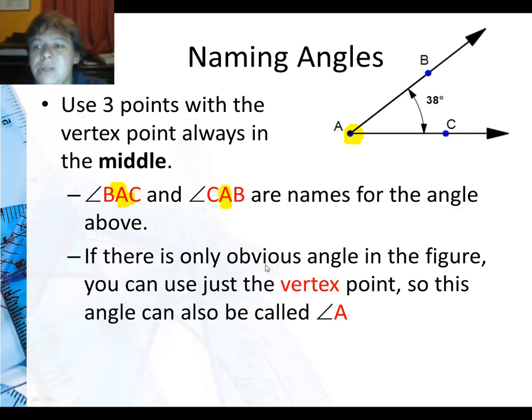Now if there is only one obvious angle in the figure, and there is here, I don't see any other angles, then you can just use the vertex point. So we could also call this angle A.